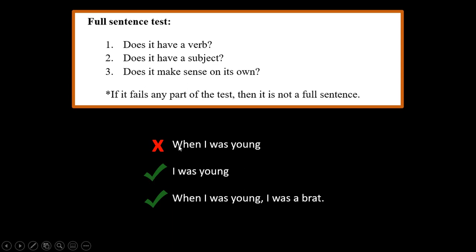There are two ways to fix it. You can cross off the word that broke it: 'I was young' — now it makes sense on its own and still has a subject and verb. Or you can attach the fragment to a full sentence: 'When I was young, I was a brat' — the 'I was a brat' is the full sentence. That is the full sentence test. When you know for sure whether you have a full sentence or a fragment, you can do really interesting things with how you put sentences together. Go ahead and try the exercises and check the answer key to see how you did. Good luck!